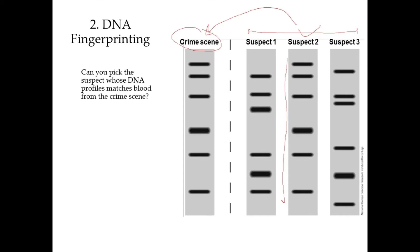Hence, this proves that suspect 2 was present at the crime scene. This technique uses molecular markers called short tandem repeats, or STR, which are highly polymorphic in the population. The odds that two people would have identical DNA profiles are as low as 1 in several billions.